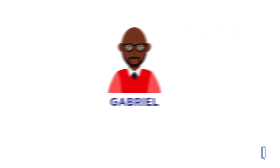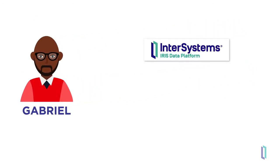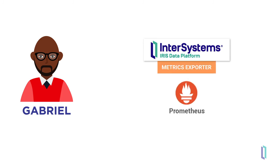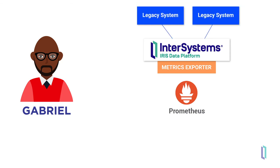One of the features built into the backend of InterSystems IRIS is a native metrics exporter. Gabriel can use Prometheus, one of the leading open source products for monitoring metrics, without having to find, install, and configure it. By simply pointing his legacy tools and platforms at a central InterSystems IRIS instance, Gabriel can leverage the Prometheus exporter to monitor all his third-party components in one place.